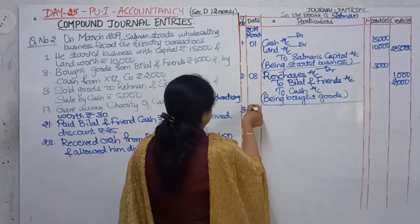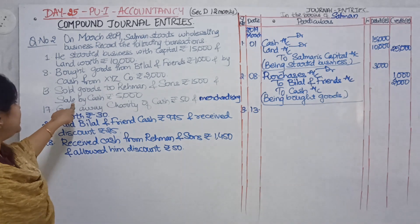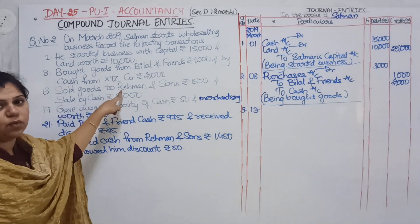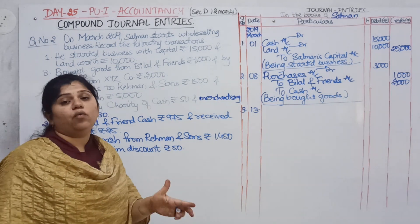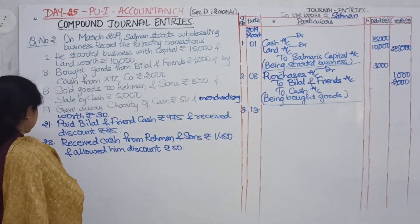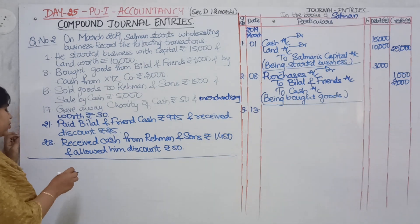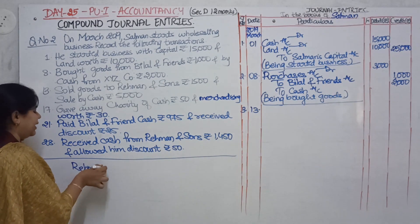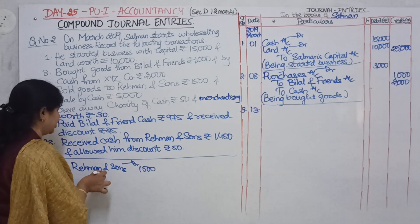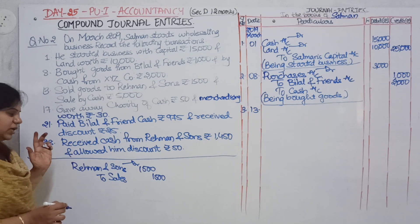Journal entry number 3, date: 13. Sold goods to Rehman and Sons for rupees 1,500 and sale by cash rupees 5,000. Again the nature of transaction is the same — both are sales. Rehman and Sons account debit for rupees 1,500. Sales account credited for 1,500. Narration: 'Being sold goods on credit.'